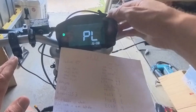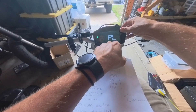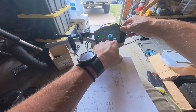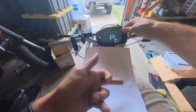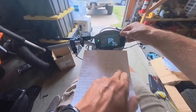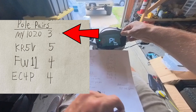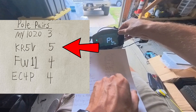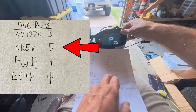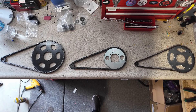The next setting is your pole pairs times your gear ratio. Pole pairs are the magnets in a motor counted in pairs — if there are six poles, that's three pairs. For a 1020 motor like the Vivor, ENC Plus, or Kunray 3000/2000, the pole pairs value is 3. The KR5V in this bike is 5 because it's a 10-pole motor. The FW11 should be 4, and I think the EC4P is also 4 because it's an 8-pole motor.